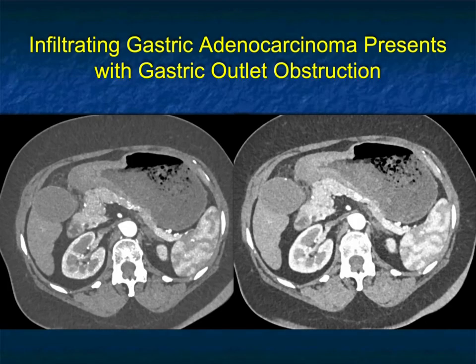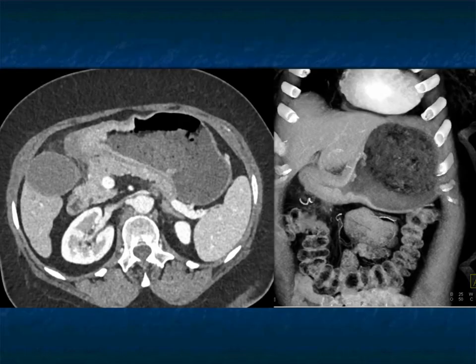Here's a patient presenting with gastric outlet obstruction. You can see fluid in the stomach, a bunch of air bubbles from retained food matter, and the infiltration in the antrum very nicely seen. There's some stranding around the antrum. You can see it particularly well in the coronal view, which really opens up the stomach.